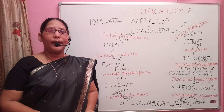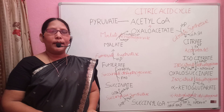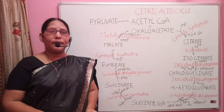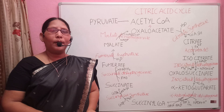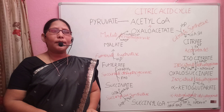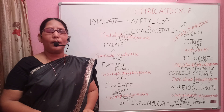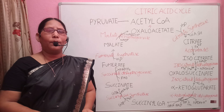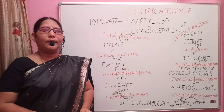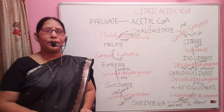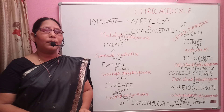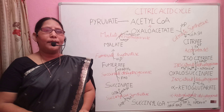It is also called the citric acid cycle because the first product of this cycle is citrate, or citric acid. The citric acid cycle is the process of oxidation of acetyl coenzyme A to carbon dioxide and water through a cyclic sequence of compounds interrelated by oxidation, reduction, and other reactions. It is the final common pathway of catabolism of carbohydrates, fats, and proteins.